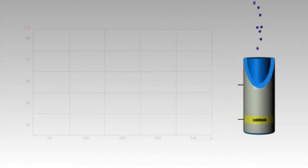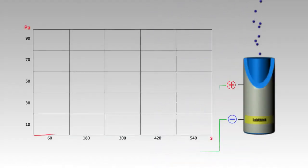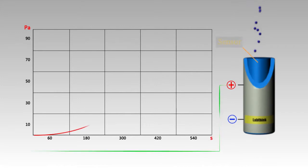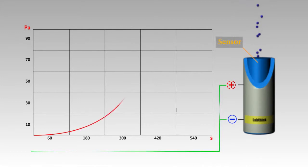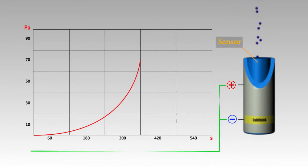Finally, the computer calculates the average gas transmission rate of the test specimen by measuring the pressure change in the low pressure cell.